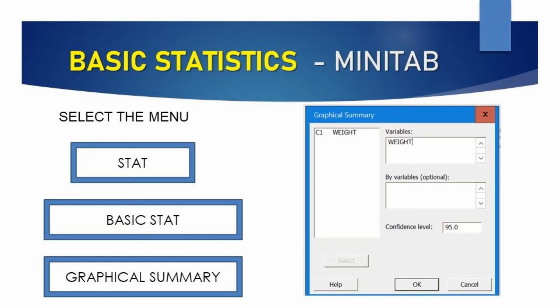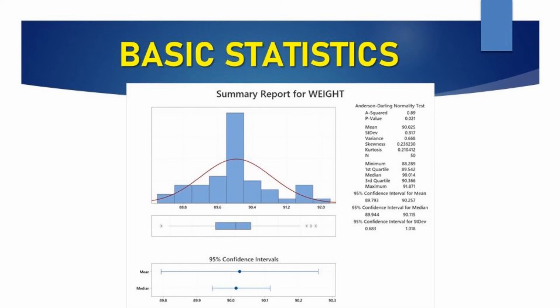With Minitab, which is the software most widely used for statistics and is a pretty cool, easy-to-use tool, we are going to be able to perform a very complete basic statistics analysis. To do that, go to the Stat menu, Basic Statistics, and Graphical Summary. Here you will see a window where you have all the data in your columns — select the column you want to study and hit okay. What you will see is a histogram chart plus a panel with many values.